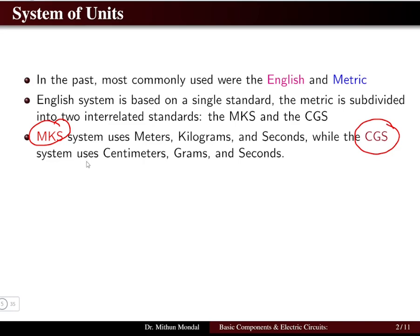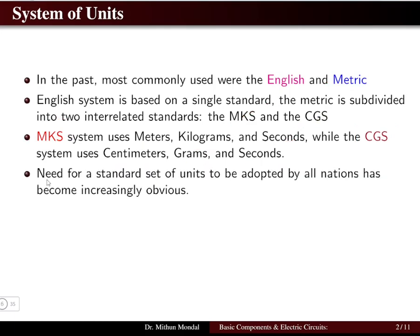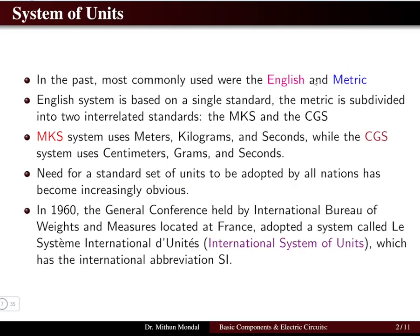The MKS system and CGS system have been given names based on their full form. MKS stands for meter, kilogram, and second, whereas the CGS system includes centimeter, gram, and second. There was always a necessity for a standard set of units to be adopted by all nations, which has become increasingly obvious.